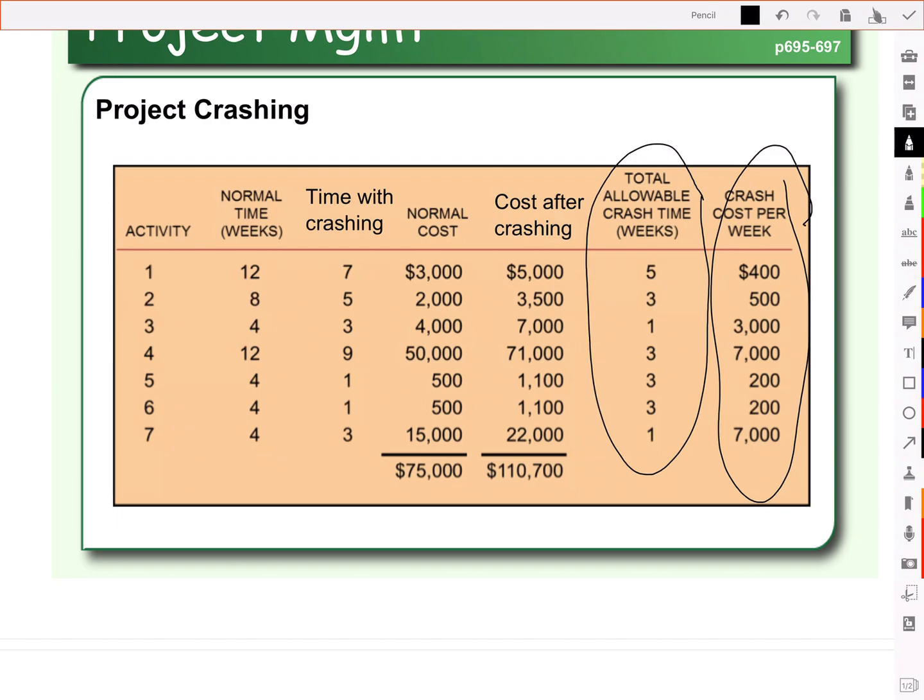That would cost us $2,000 to shave off the five weeks, so if we only shaved off one week, the cost would be about $400. So we need our cost per week and the total amount that we can shave off of each activity. The next decision we need to make is which activities do we start crashing?